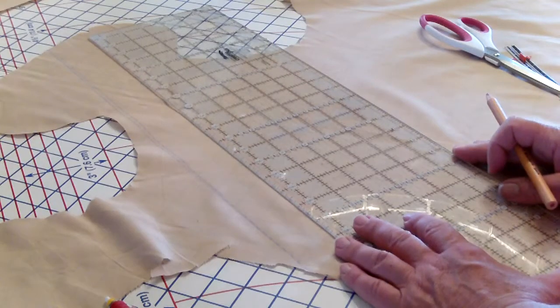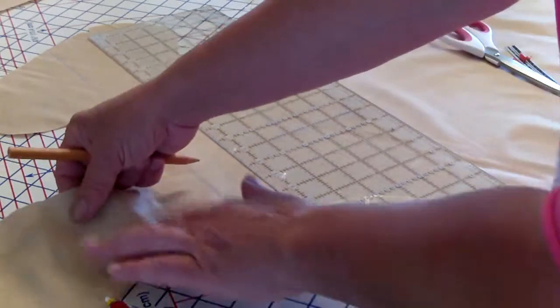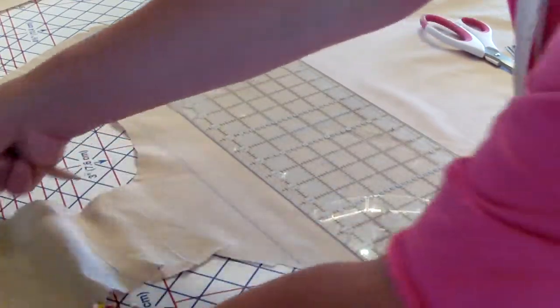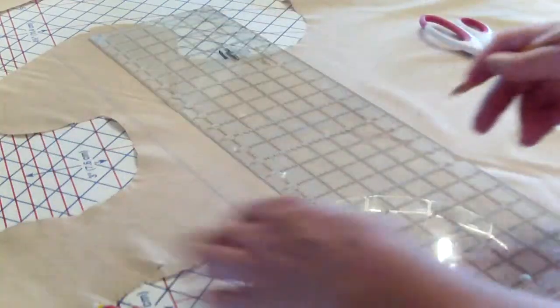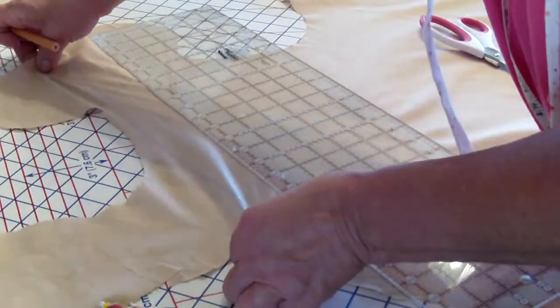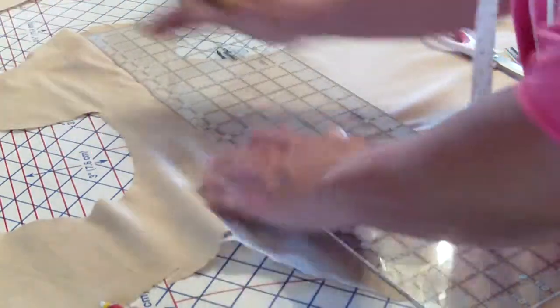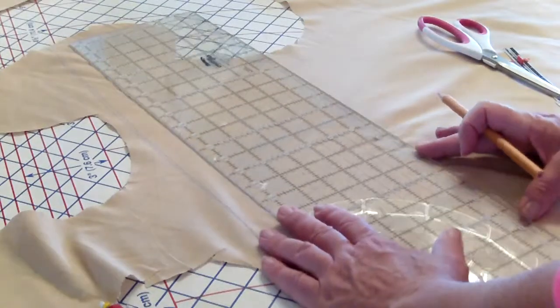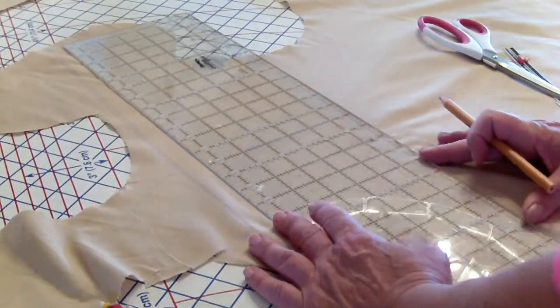Okay, so now what I'm doing is, I'm working on the diagonal, because to do bias, you've got to work on the diagonal of the fabric. If not, you don't have a stretch. See how it stretches that way?